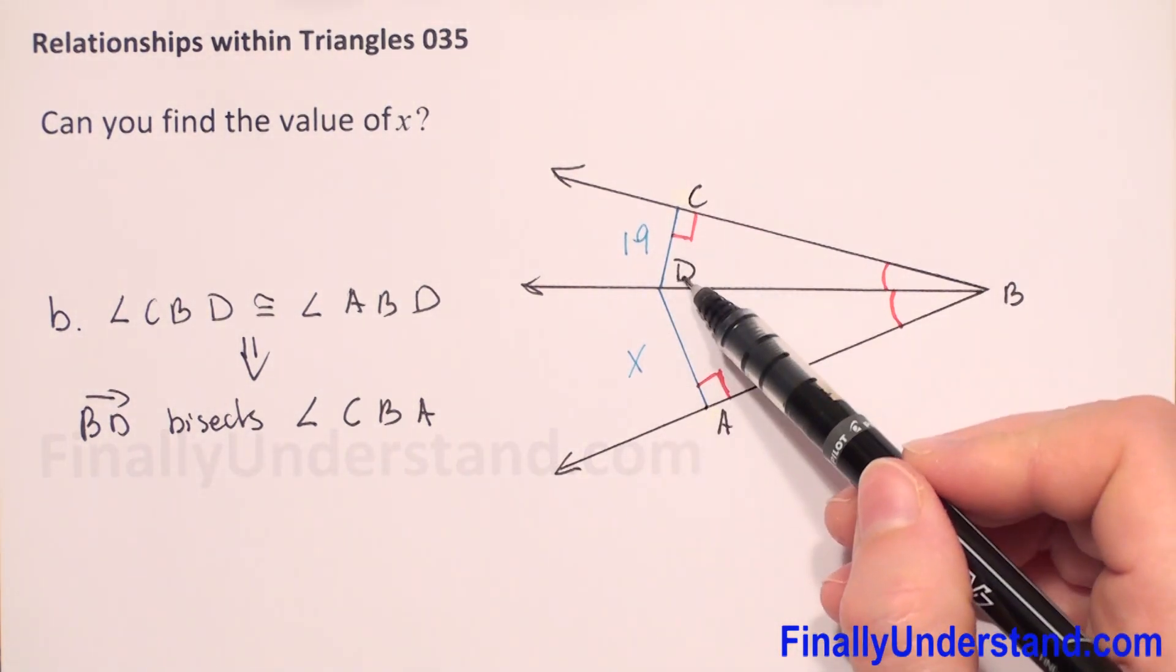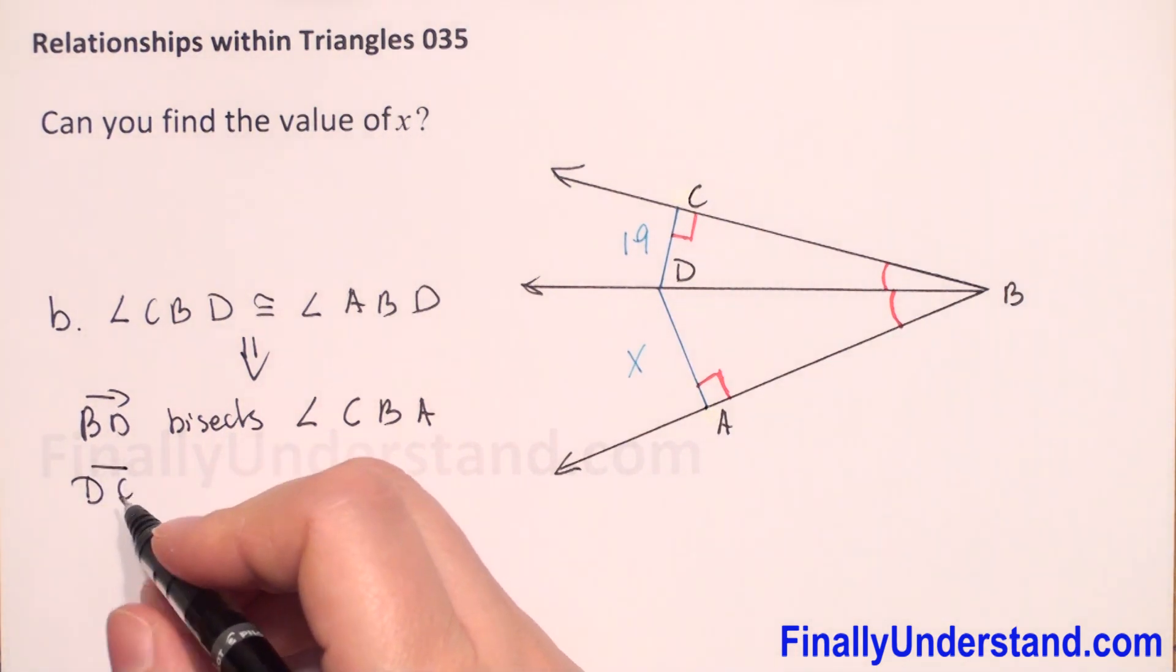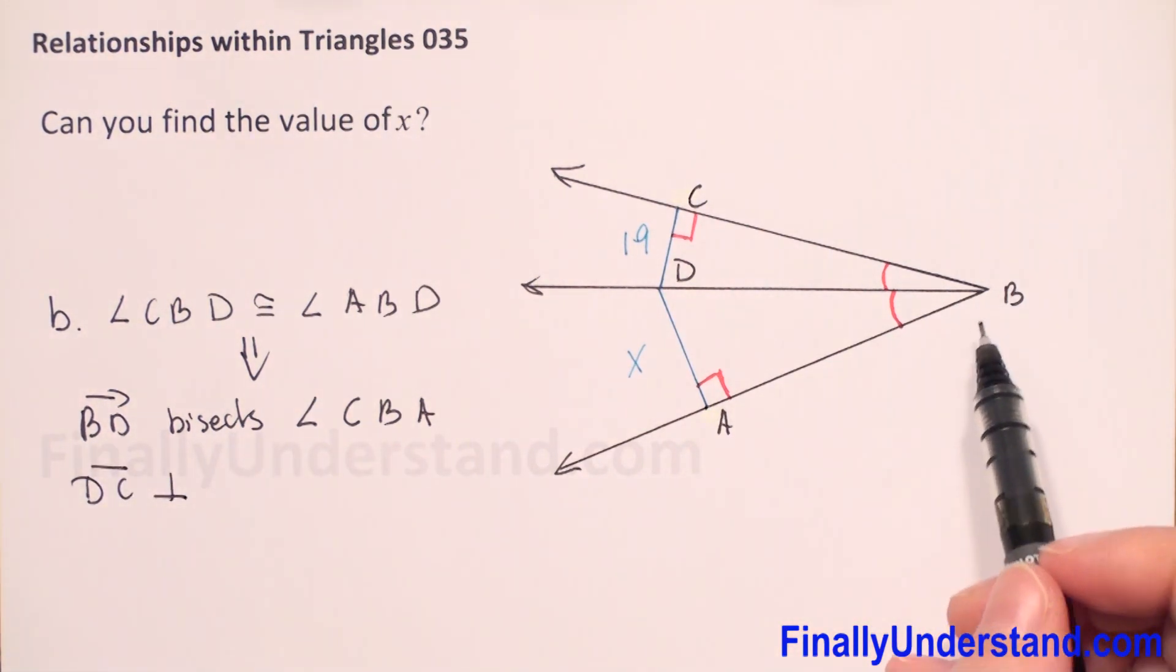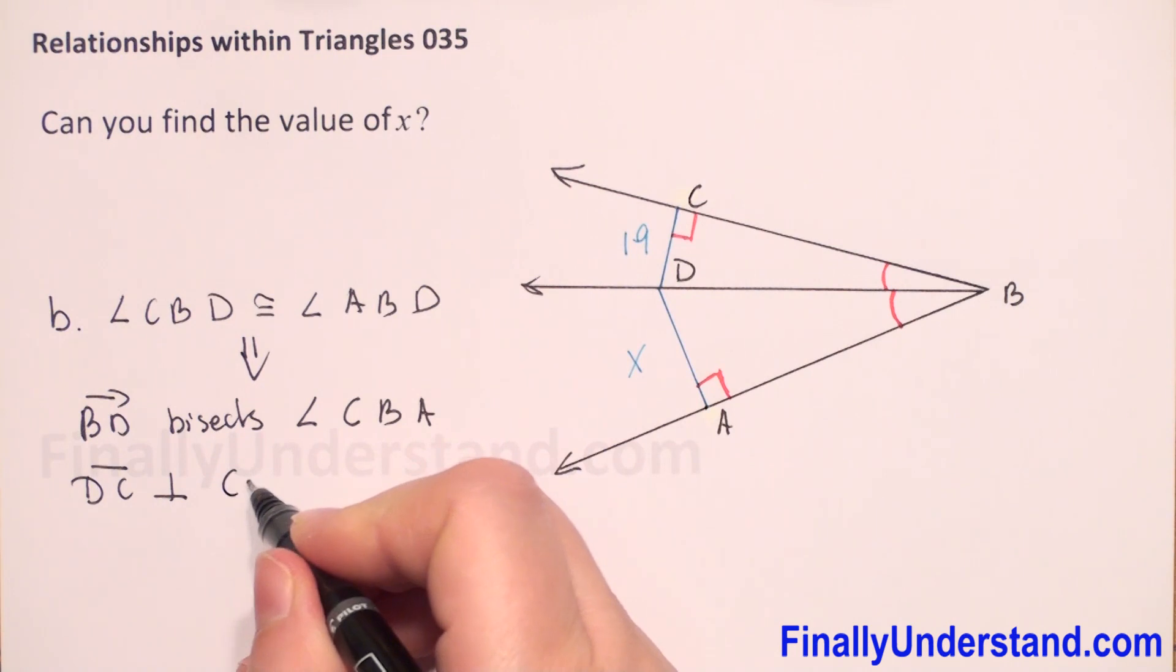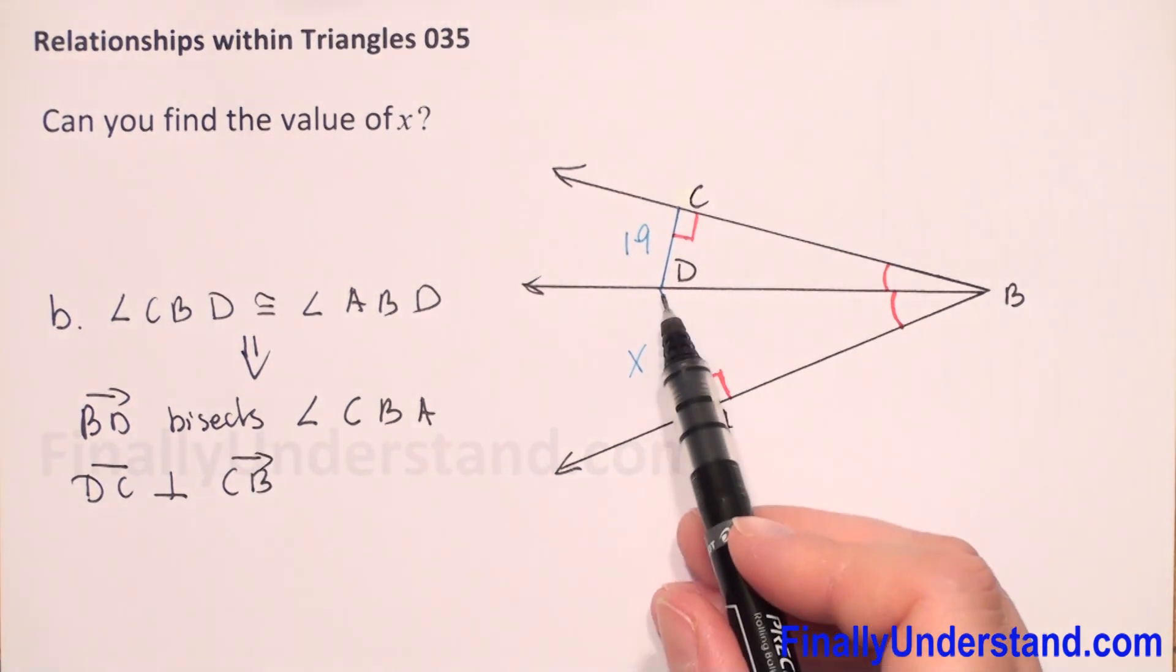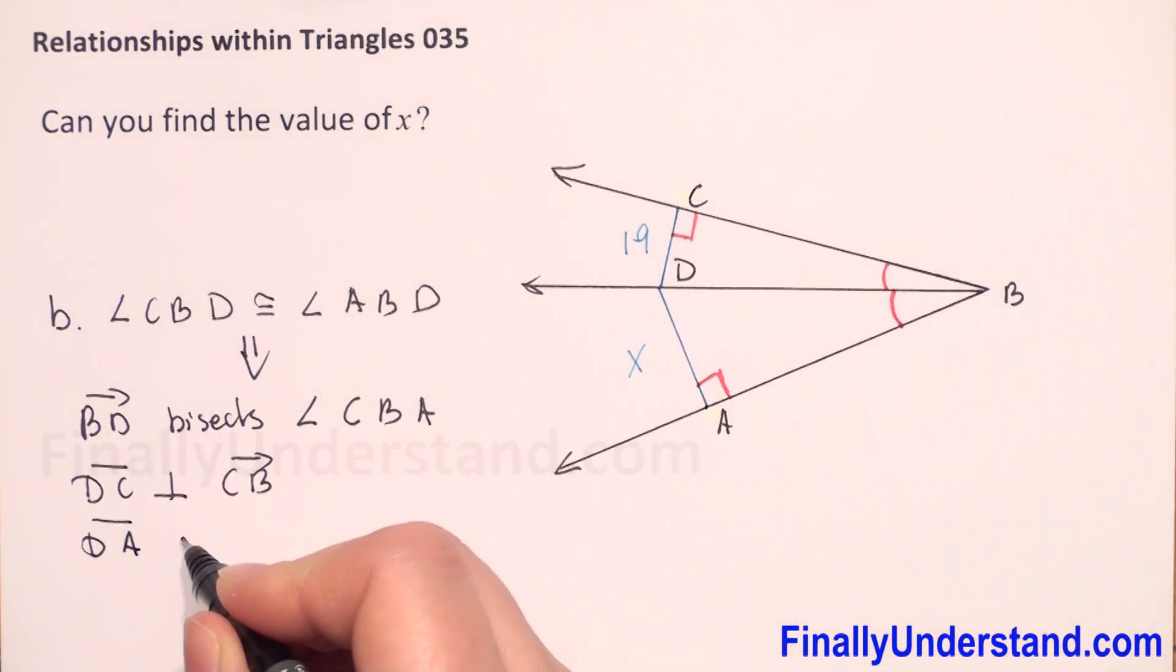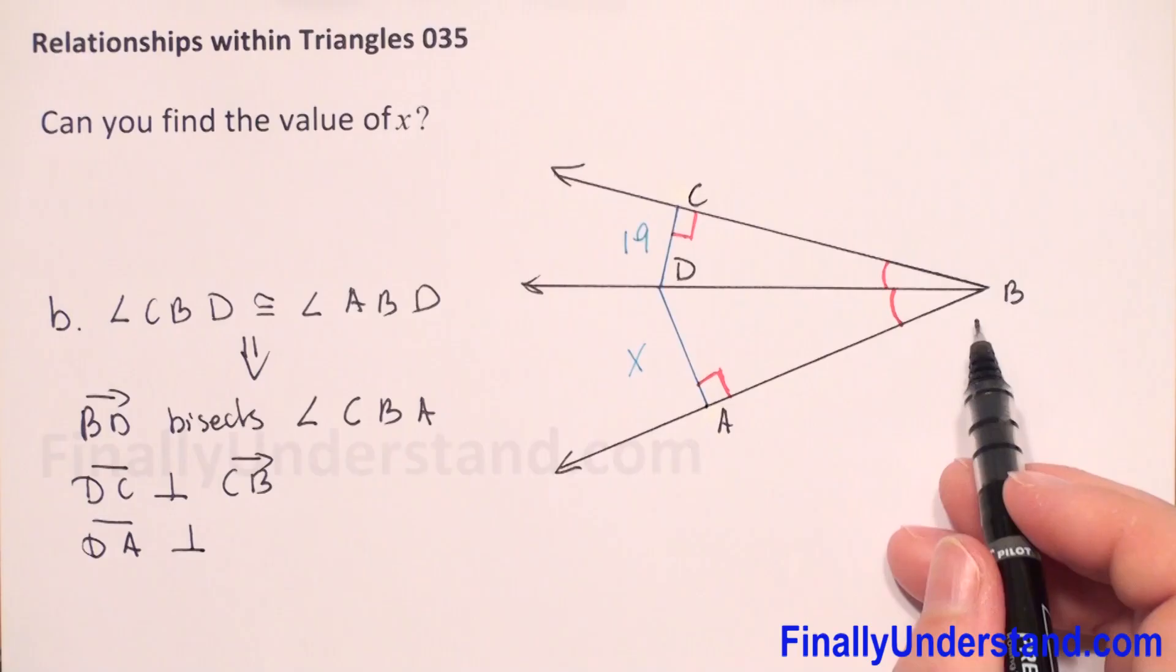We have given that DC segment is perpendicular to ray BC, and on the other side, we have that DA segment is perpendicular to BA.